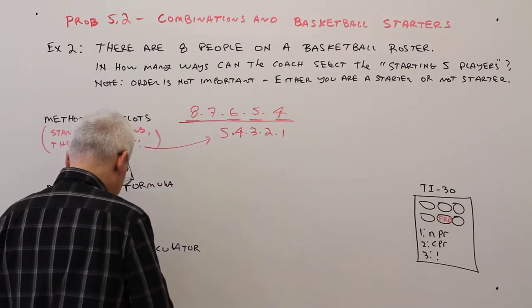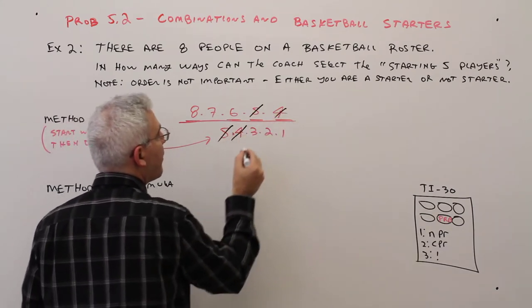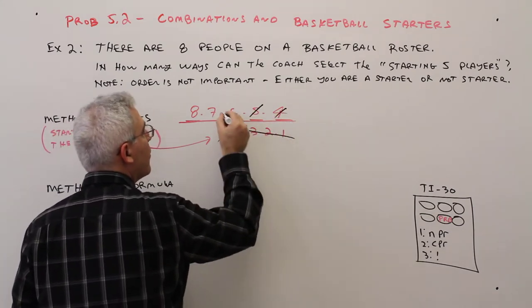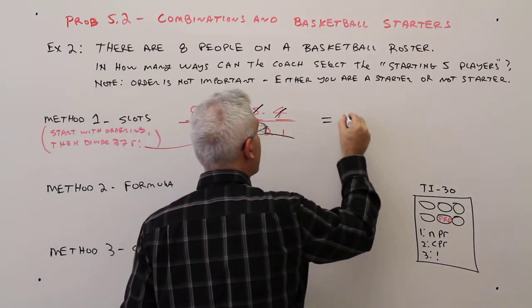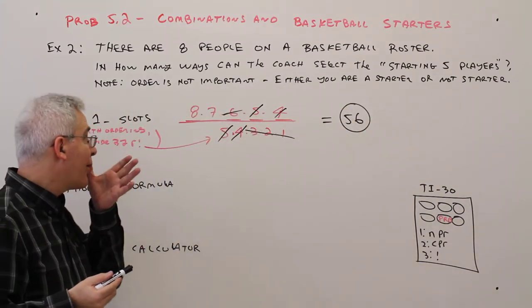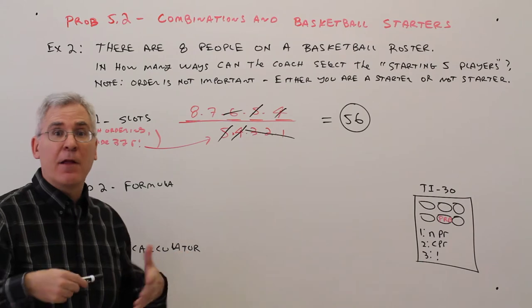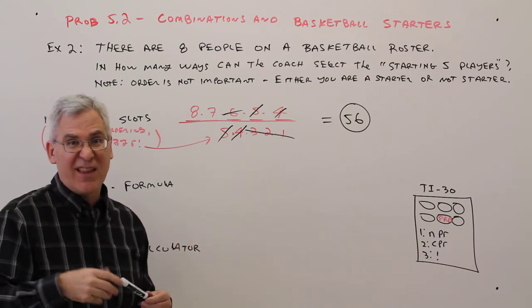Okay, then I could cancel 5 with 5, 4 with 4, 3, 2, 1 with 6, and 8 times 7 is just 56. So that would be the number of ways of the coach selecting the 5 starters with order not being counted.